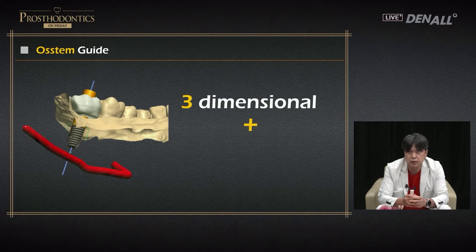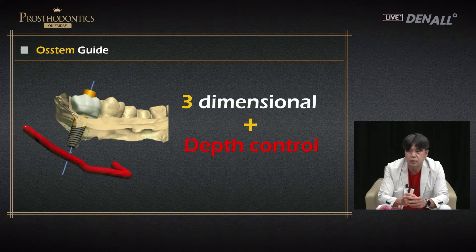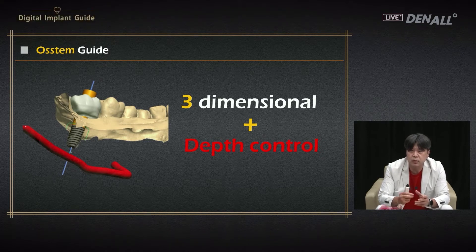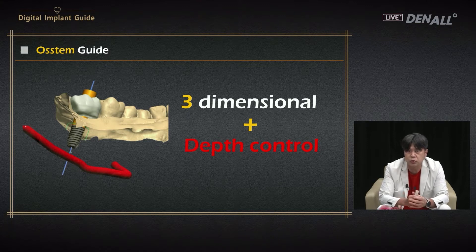A three-dimensional guide requires mesiodistal, buccolingual axial inclination, and — most importantly — depth control. In the implant studio design software, you can see the alveolar nerve canal running at the bottom. Depending on the length of the implant, the canal can be invaded, so that must be considered. That is why we need a guide that can do depth control.